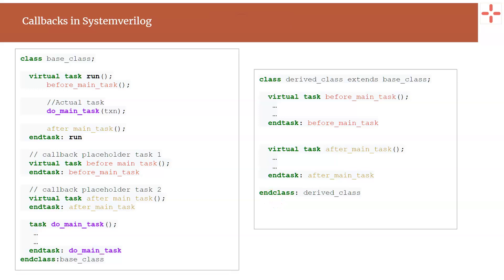As a summary, in SystemVerilog, callbacks are achieved using object-oriented programming. When defining the base class, before and after the main task or function, you add placeholder virtual tasks or functions which are empty in the base class. Whenever you want to modify the behavior, you define a derived class extending from the base class and fill in those extra tasks or functions. Callback methods are typically functions, but tasks are sometimes used as well.